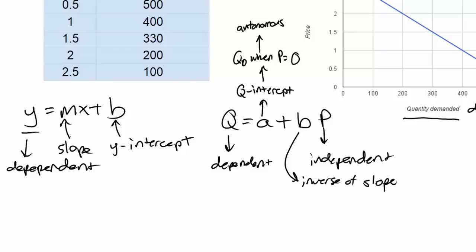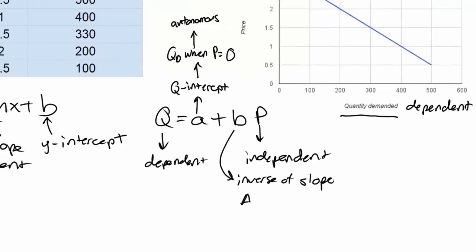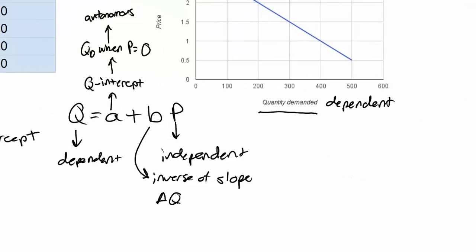Why is that? Well because we are now measuring the change in quantity resulting from a particular change in price. So whereas the slope would be change in y over change in x, we have flipped that around because our x variable is Q and our y variable is P.